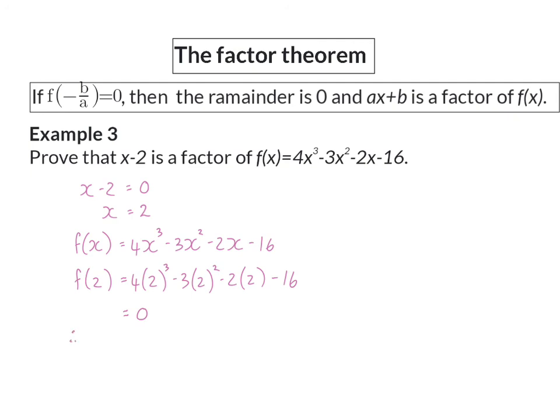So, this means that the remainder will be equal to 0 if we divide this function by x minus 2. And that implies that x minus 2 is a factor of the function.